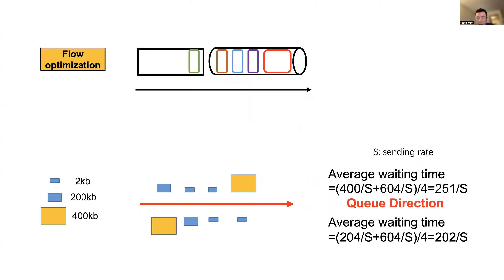In order to avoid head-of-line blocking, we further optimize the flow transmission order. The yellow square represents large flows and the blue square represents short flows. If we use FIFO ordering, the average waiting time is 251 over sending rate. If we use flow optimization, the average waiting time is reduced to 202 over sending rate. In our deployment, the queue is periodically optimized and priority is determined not only by flow size but also by flow completion remaining time and flow waiting time in the queue.